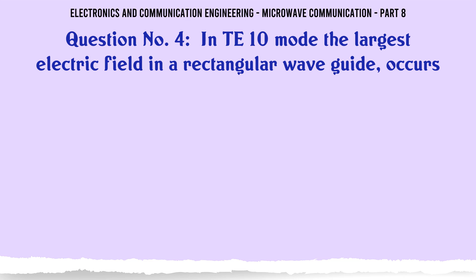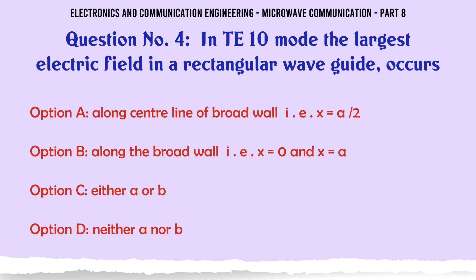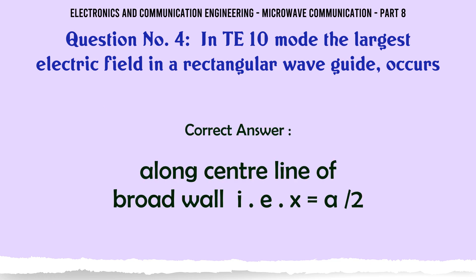In TE10 mode, the largest electric field in a rectangular waveguide occurs — A. Along center line of broad wall (i.e., x = a/2), B. Along the broad wall (i.e., x = 0 and x = a), C. Either A or B, D. Neither A nor B. The correct answer is along the center line of the broad wall (x = a/2).